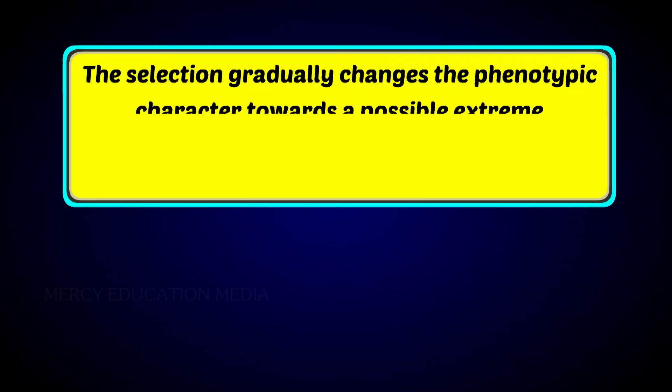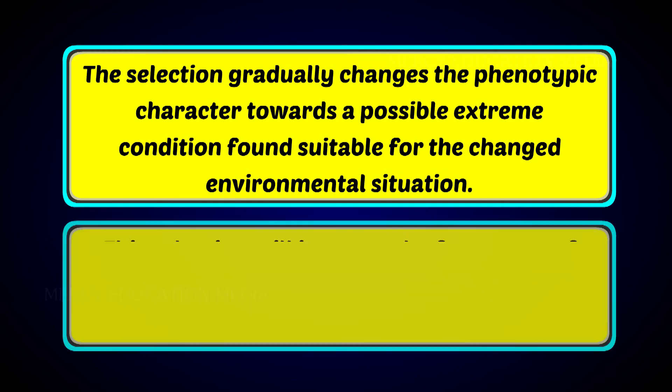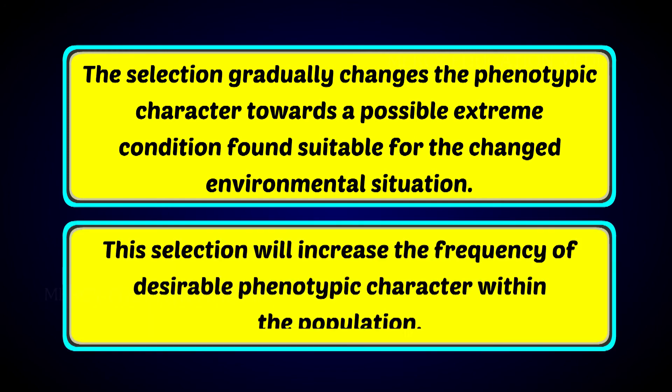Directional selection: the selection gradually changes the phenotypic character towards a possible extreme condition found suitable for the changed environmental situation. This selection will increase the frequency of desirable phenotypic character within the population.